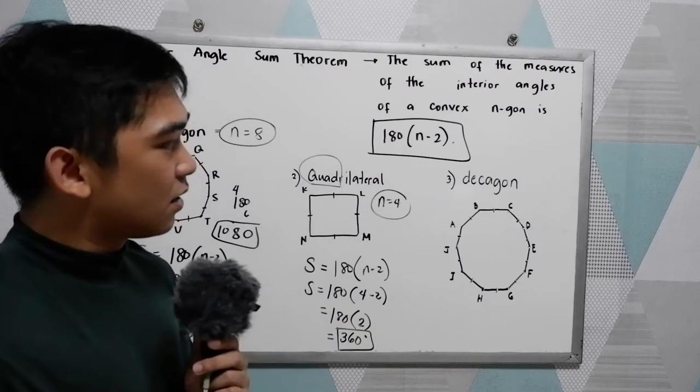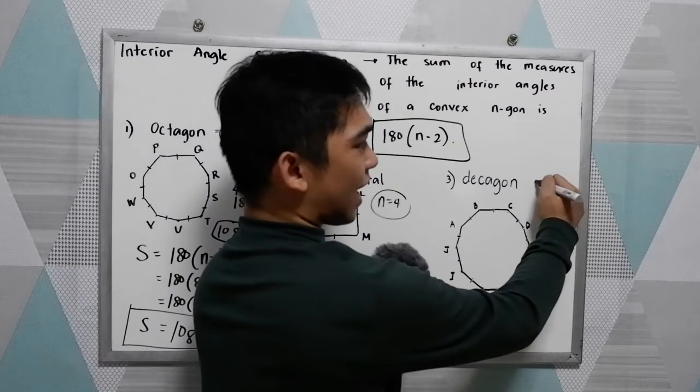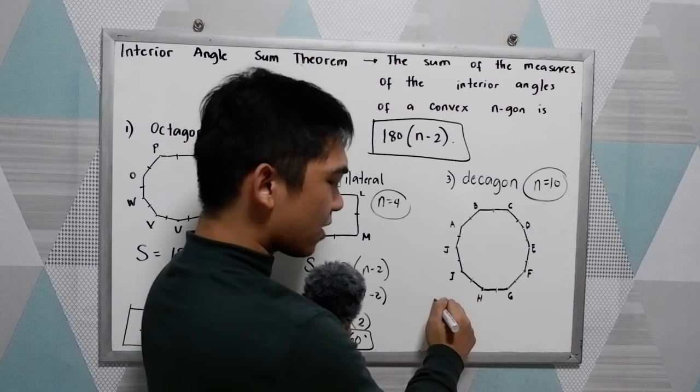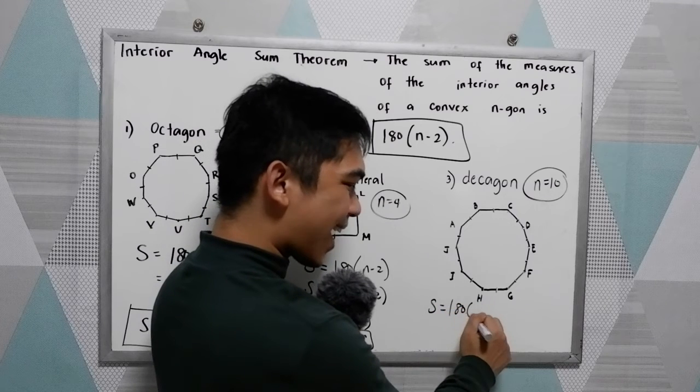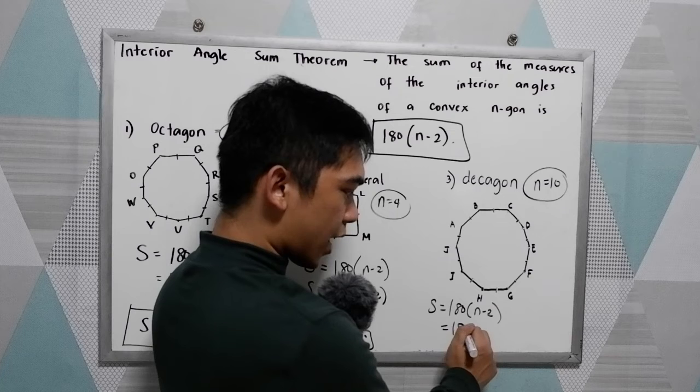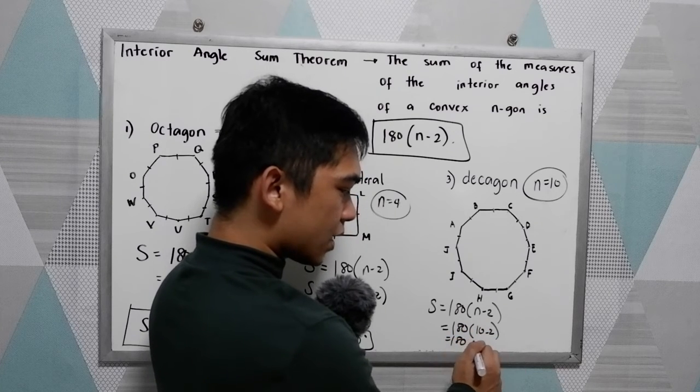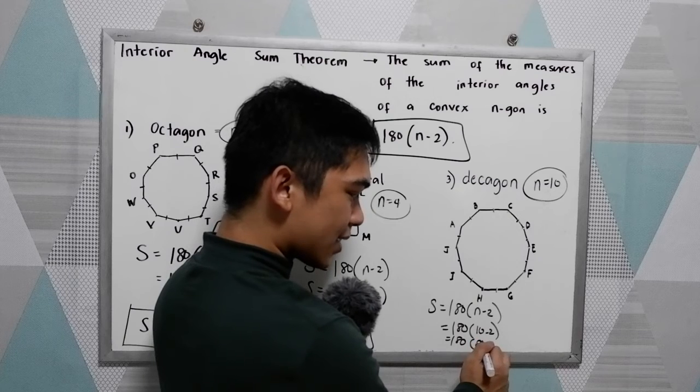Now, decagon. Decagon has 10 sides, so our n is 10. So we have S is equal to 180 times n minus 2. So 180 times 10 minus 2. So we have 180 times 10 minus 2, that is 8.